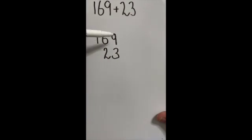In the first example we have 169 plus 23. When we set this out, because it's addition, it's easier if we always have the biggest number at the top and the second number underneath.